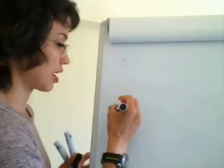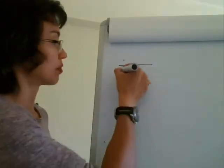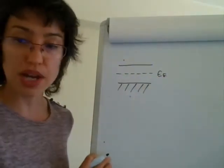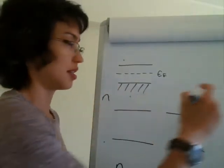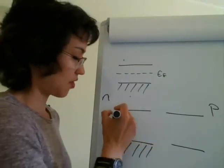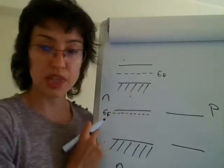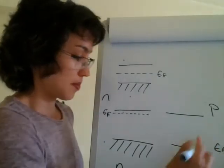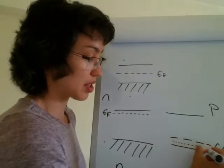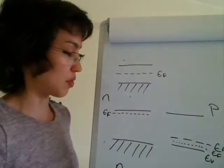The Fermi level represents where the probability of finding an electron is a half. Comparing three scenarios: in an intrinsic semiconductor with no doping, the Fermi level always sits halfway between the bands. In an n-type semiconductor, the Fermi level EF is found halfway between the donor level ED and the conduction band EC. In a p-type semiconductor, you have an acceptor level EA, and the Fermi level sits halfway between EA and EV.